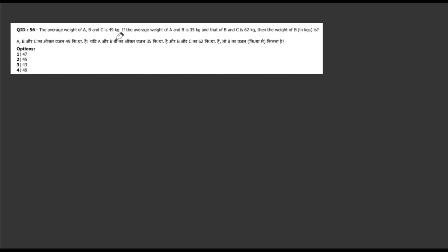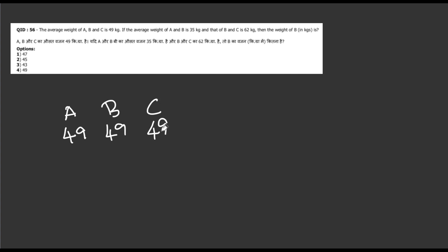The average weight of A, B, C is 49. There are 3 members: A, B, C. The average weight of A and B is 50. In the statement, A, B, C average is 49, and A and B average is 50.